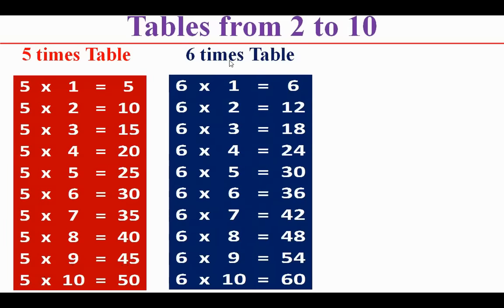6 times table: 6 1s are 6, 6 2s are 12, 6 3s are 18, 6 4s are 24, 6 5s are 30, 6 6s are 36, 6 7s are 42, 6 8s are 48, 6 9s are 54, 6 10s are 60.